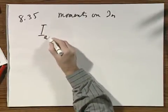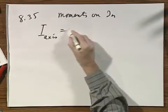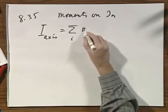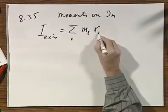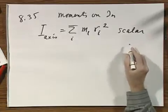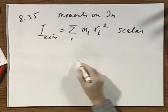I have to define an axis of rotation, and the moment of inertia about that axis of rotation is defined this way. This is a scalar, it's not a vector, and it requires a little bit of an explanation.